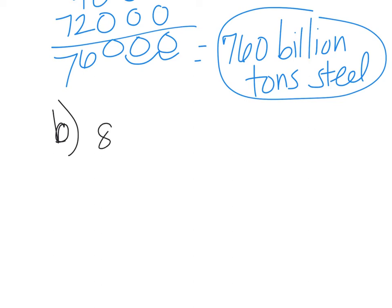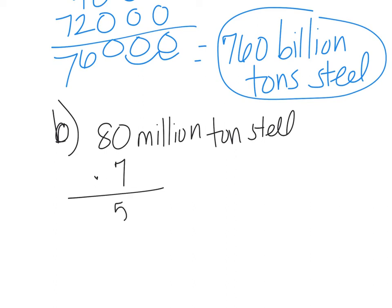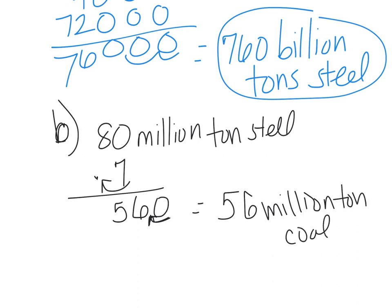So it says for every 80 million tons of steel, when we recycle, we use 0.7 fewer tons of coal. So times 0.7. And we end up with 560. Decimal moves there because we have one here, we have to move it here. And so our answer is that we can actually use 56 million tons of coal. We can use less of this. So this is the amount of coal that is saved.